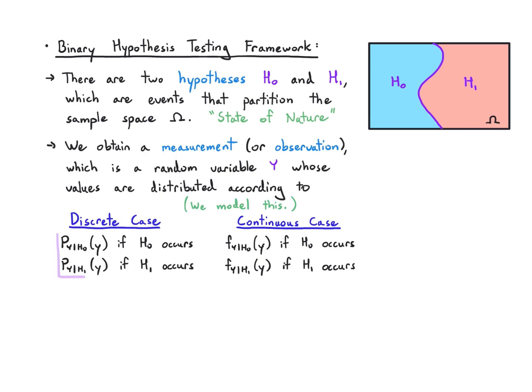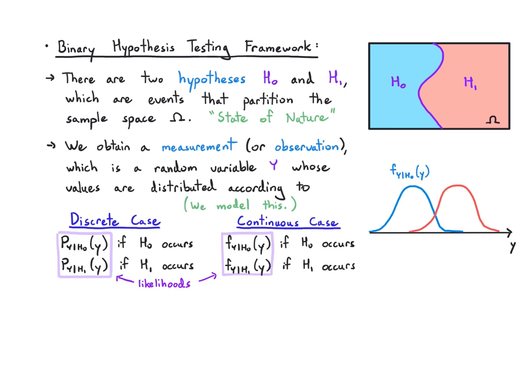We can model this kind of process mathematically. So here's our mathematical model — just a cartoon for now. If h0 is generated, you'll see a measurement with mean kind of to the left, spread out like this blue distribution. And if h1 occurred, you'll see the mean more to the right, spread out using this red distribution.